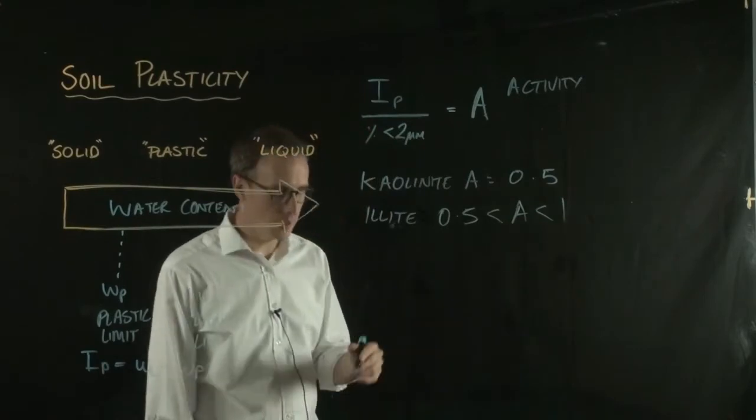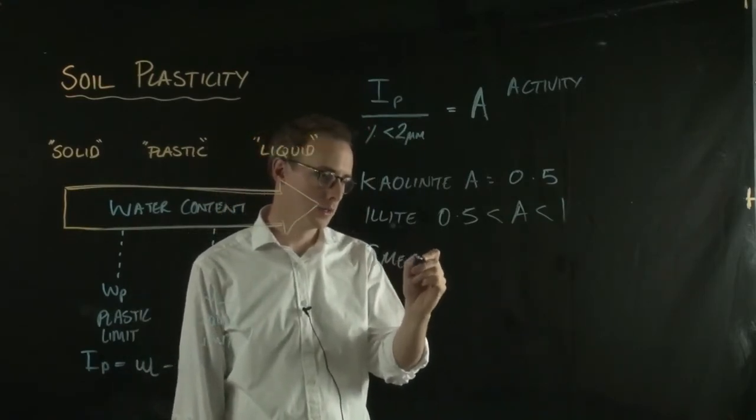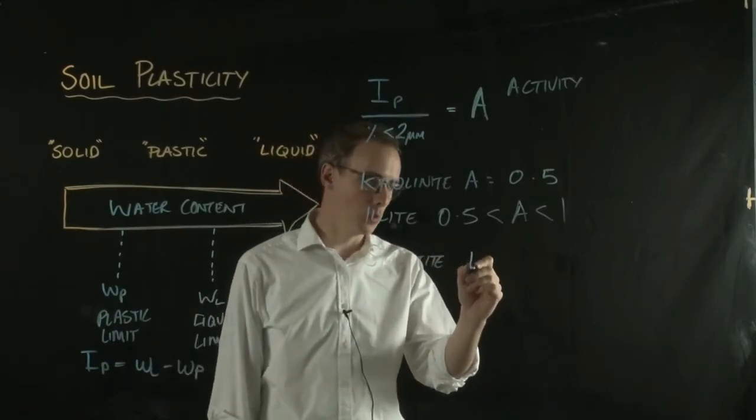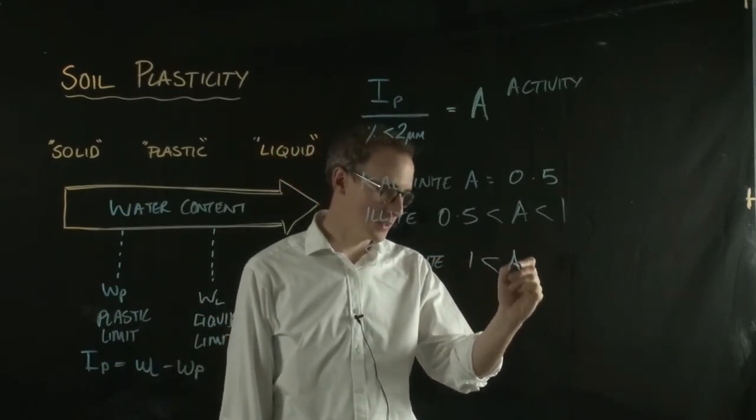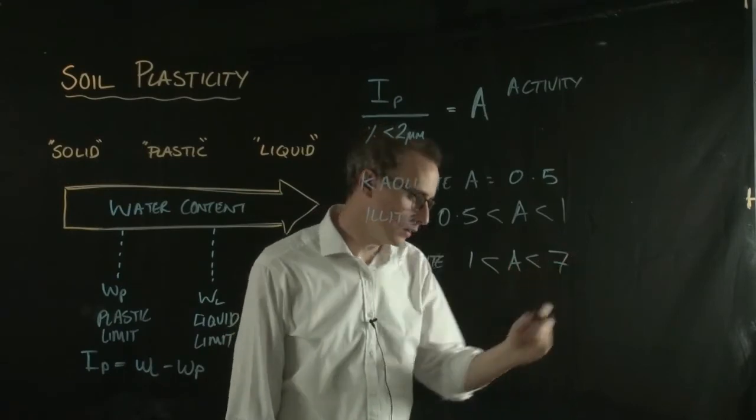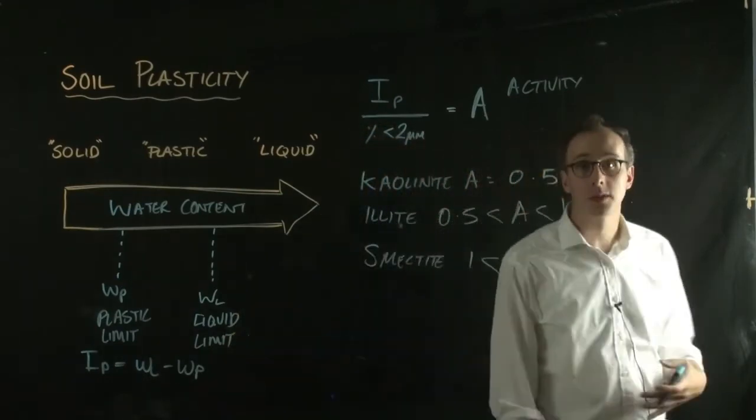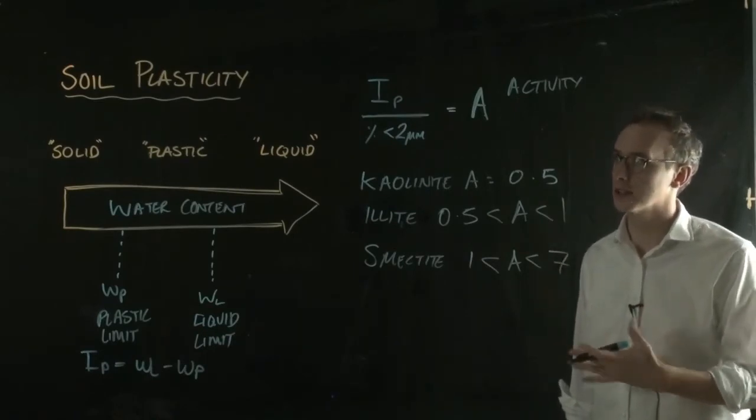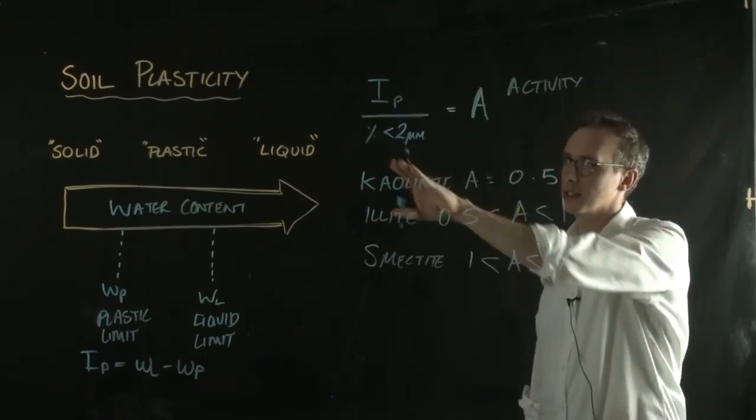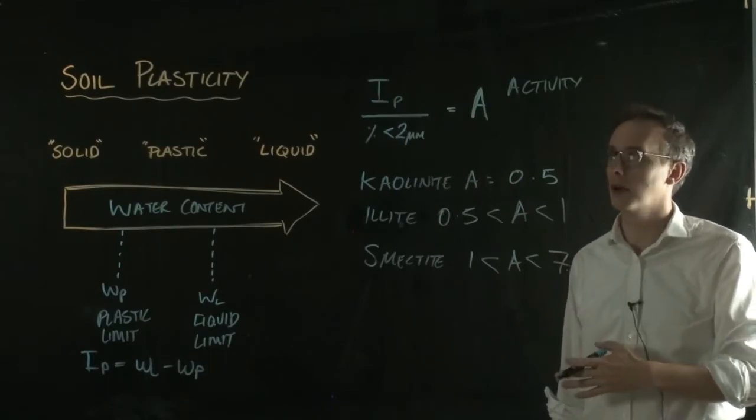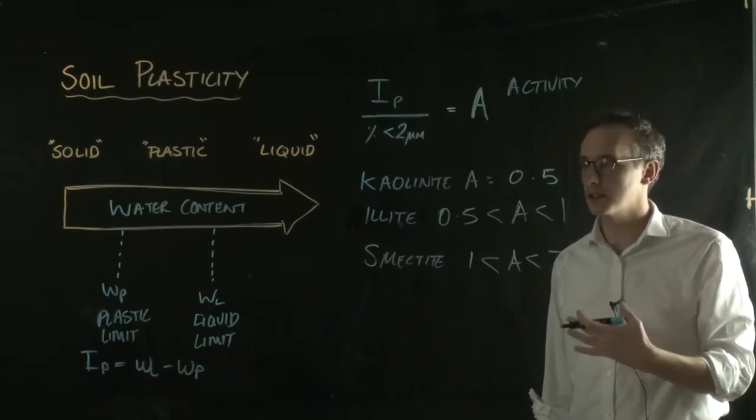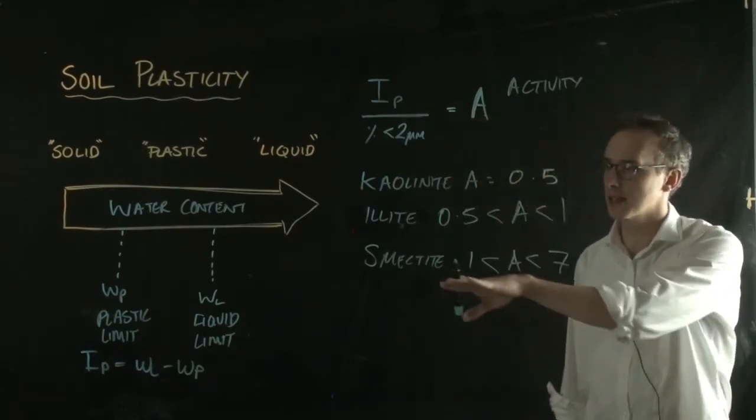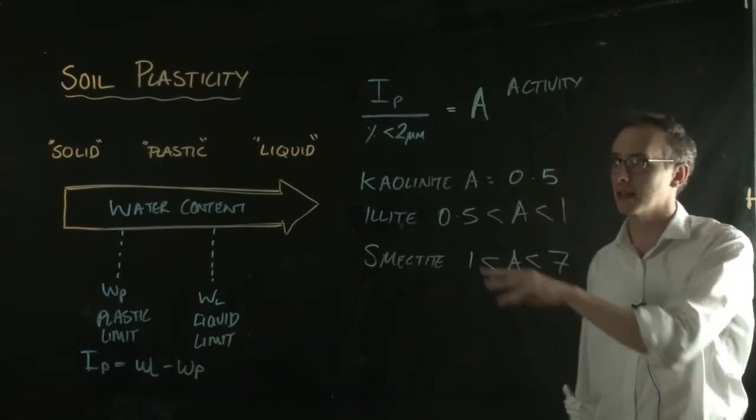Illite has an activity between 0.5 and 1. And something like a smectite has an activity of between 1 and 7. So depending on the clay mineralogy that you have within your soil, the size fraction less than 2 micrometers will have a much different impact on the plasticity index. So things like a smectite will be way more plastic than a kaolinite.